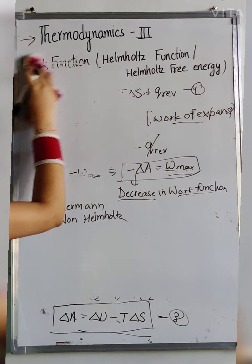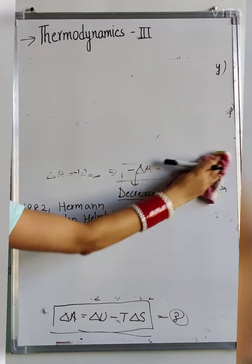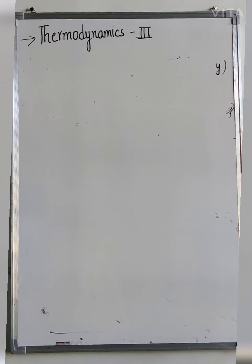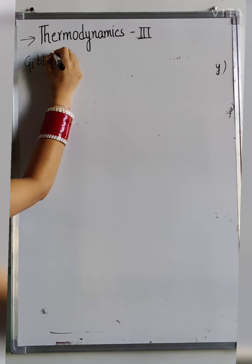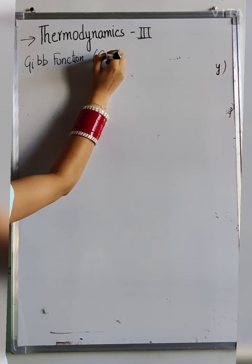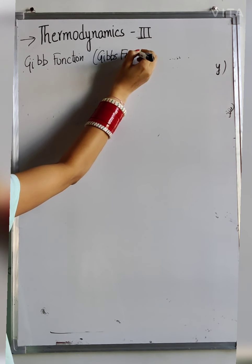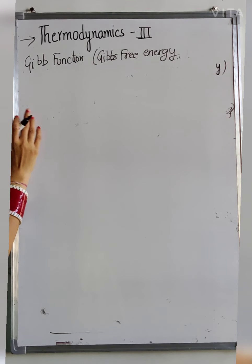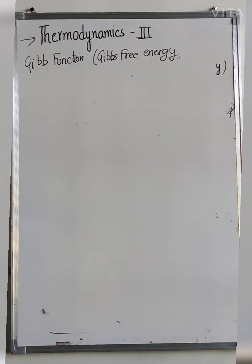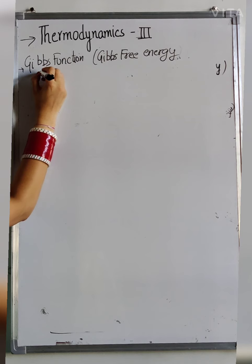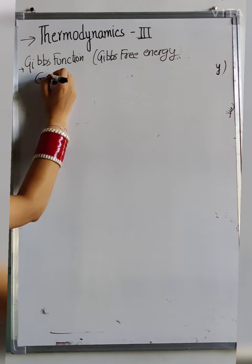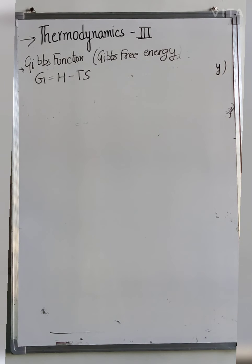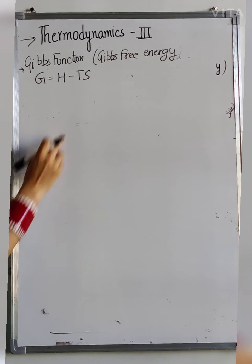Our next thermodynamic quantity is the Gibbs function, also known as Gibbs free energy. Both the Helmholtz free energy and the Gibbs free energy are collectively known as free energy functions. The Gibbs function G is equal to H minus TS, where H is enthalpy or heat content, T is temperature, and S is entropy of the system.